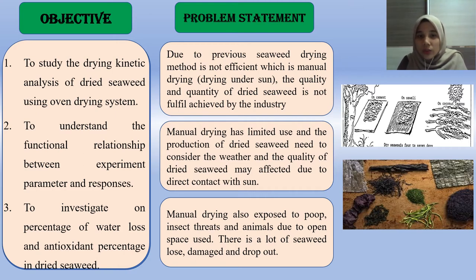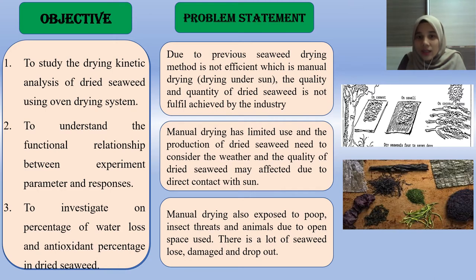This project is motivated by the fact that previous seaweed drying methods are not efficient. Manual drying under the sun does not fulfill the quality and quantity required by the industry. Manual drying is also limited by weather conditions, and the quality of dry seaweed may be affected by direct sun contact. Furthermore, manual drying exposes seaweed to insects, dirt, and animals due to open space use, resulting in significant seaweed loss, damage, and dropout.